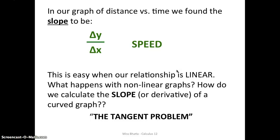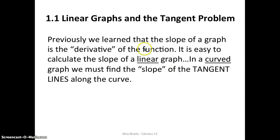So this takes us to the tangent problem. And the tangent problem refers to one of the problems that calculus helps us overcome. So this jumps right into our first unit on linear graphs and the tangent problem. So we learned that the slope of a graph is the derivative of the function. It's easy to calculate the slope of a linear graph. However, in a curved graph, what we do is we find the slope of the tangent lines along the curve. Now what's a tangent line? A tangent line is a line that intersects the curve at one point only. Now let's see what this looks like.